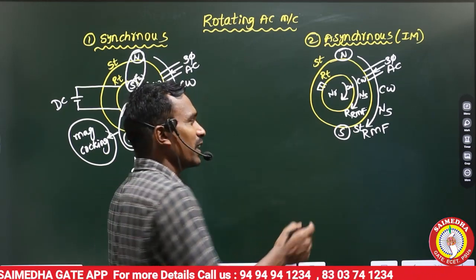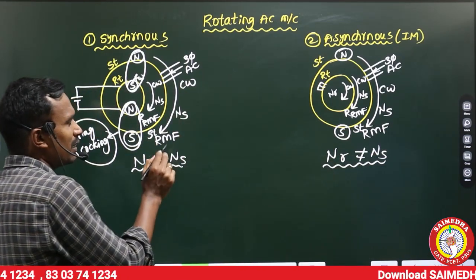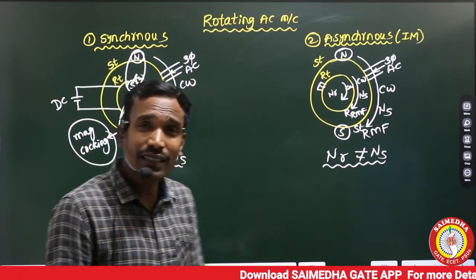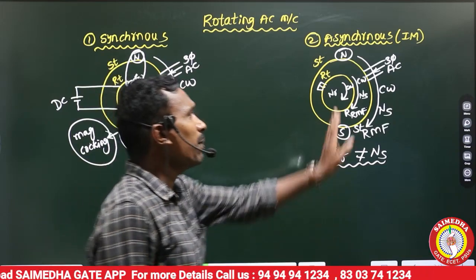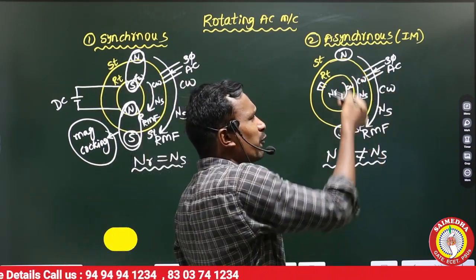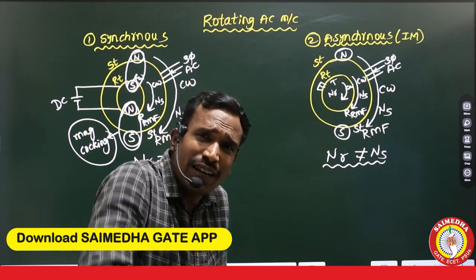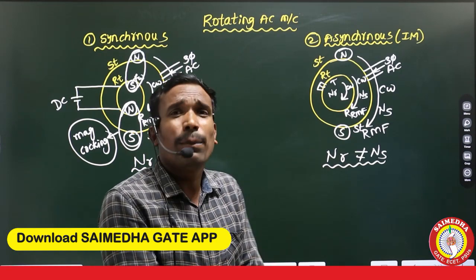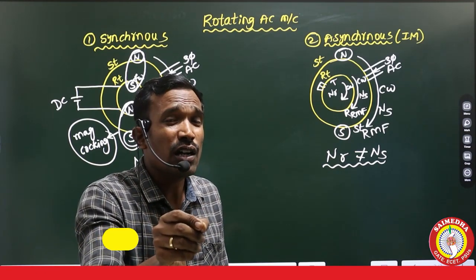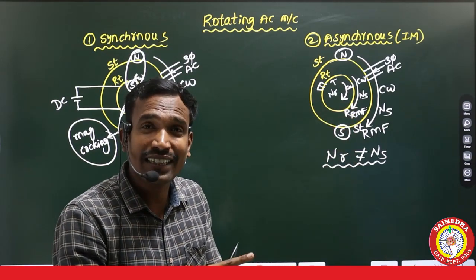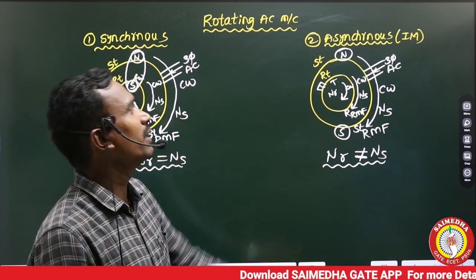The rotor will rotate in clockwise direction, but the rotor speed is not equal to synchronous speed. In the synchronous machine, the rotor speed equals synchronous speed, but in the induction machine, the rotor speed does not equal synchronous speed. In the synchronous machine we have magnetic locking between stator and rotor, but there is no magnetic locking in the induction machine. Due to mechanical inertia, air friction, and bearing friction, the rotor tries to catch the synchronous speed but is unable to reach it. That is why the rotor speed does not equal synchronous speed in the induction machine.